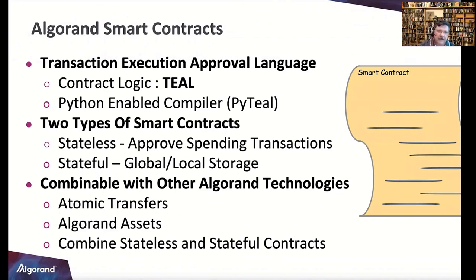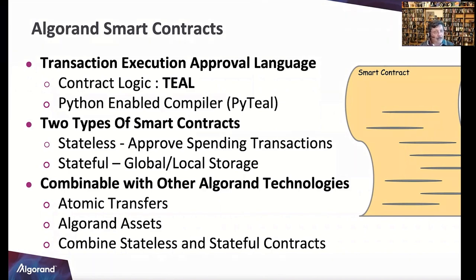Let's talk about smart contracts. We have TEAL — Transaction Execution Approval Language — which is assembly and runs right on the blockchain. Why assembly? The lean and mean thing: it doesn't get leaner and meaner. VMs for interpreters and compilers are very bulky and time consuming. For those who don't want to get down to assembly level, we've got other solutions. For Python devs, there's PyTEAL — a Python-enabled compiler.